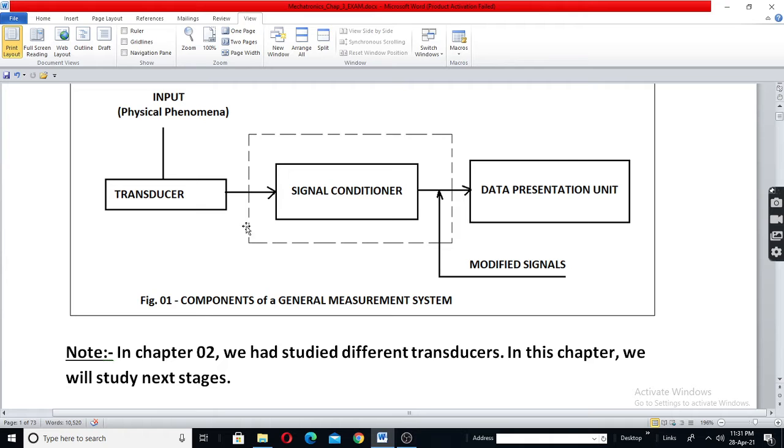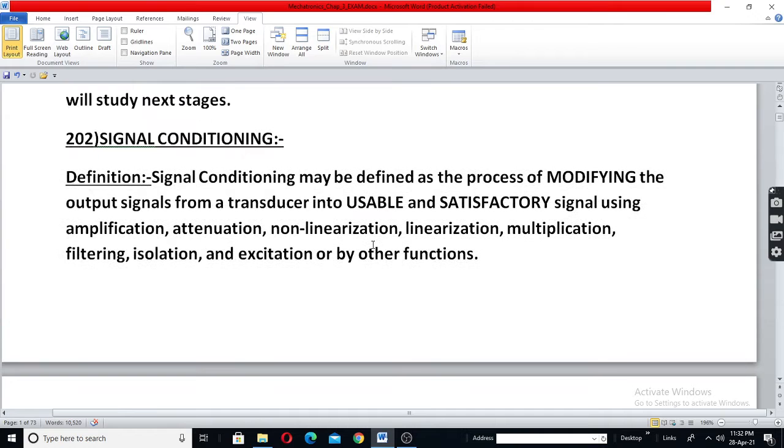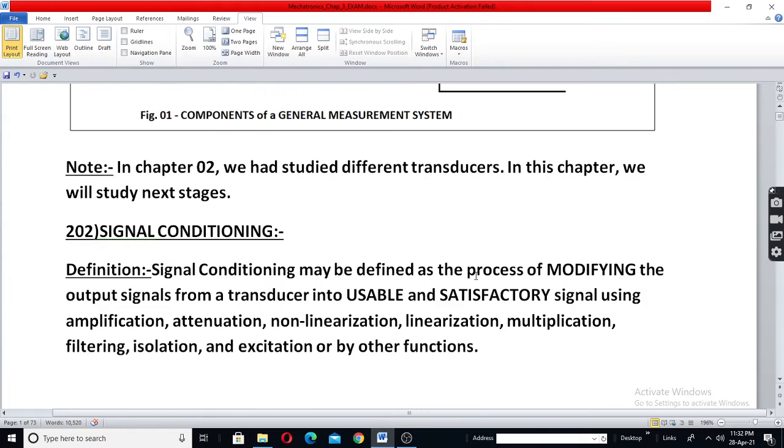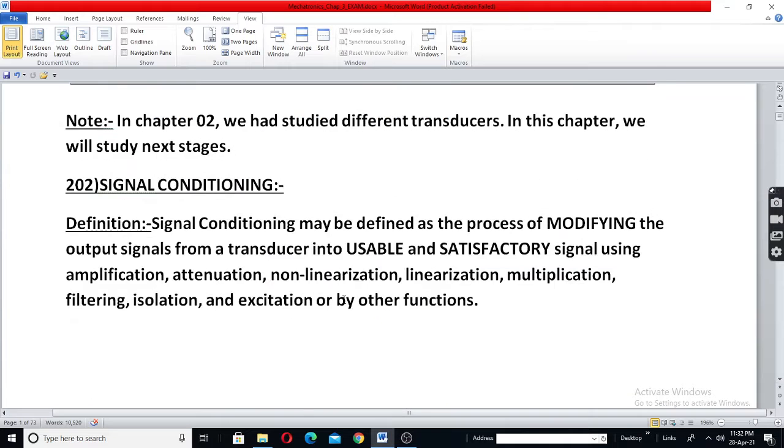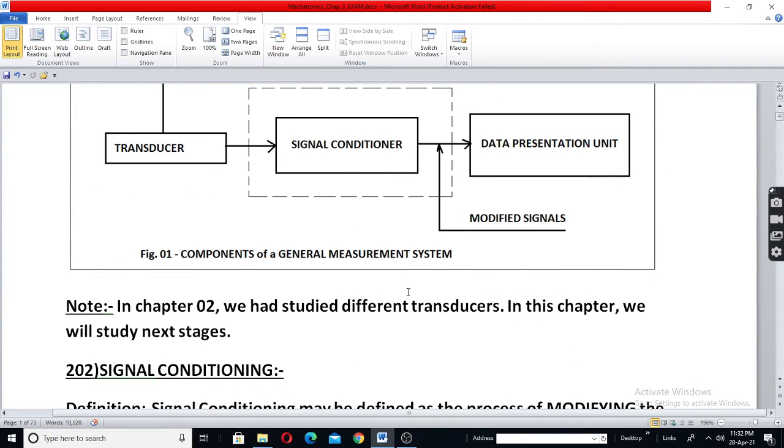And sometimes the output may not be linear. You may have to linearize it. And at the output, you may have to non-linearize it once again. So at the output, you may need non-linearization. Signal conditioning happens at input as well as output. You have studied in the block diagram, in the first chapter, input signal conditioning and output signal conditioning blocks.